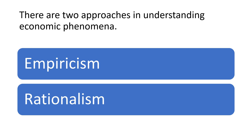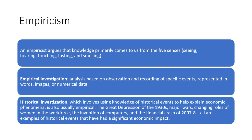An empiricist argues that knowledge primarily comes to us from the five senses. Historical investigation, which involves using knowledge of historical events to help explain economic phenomena, is also usually empirical. The Great Depression of the 1930s, major wars, changing roles of women in the workforce, the invention of computers, and the financial crash of 2007 to 2008 are all examples of historical events that have had a significant economic impact.